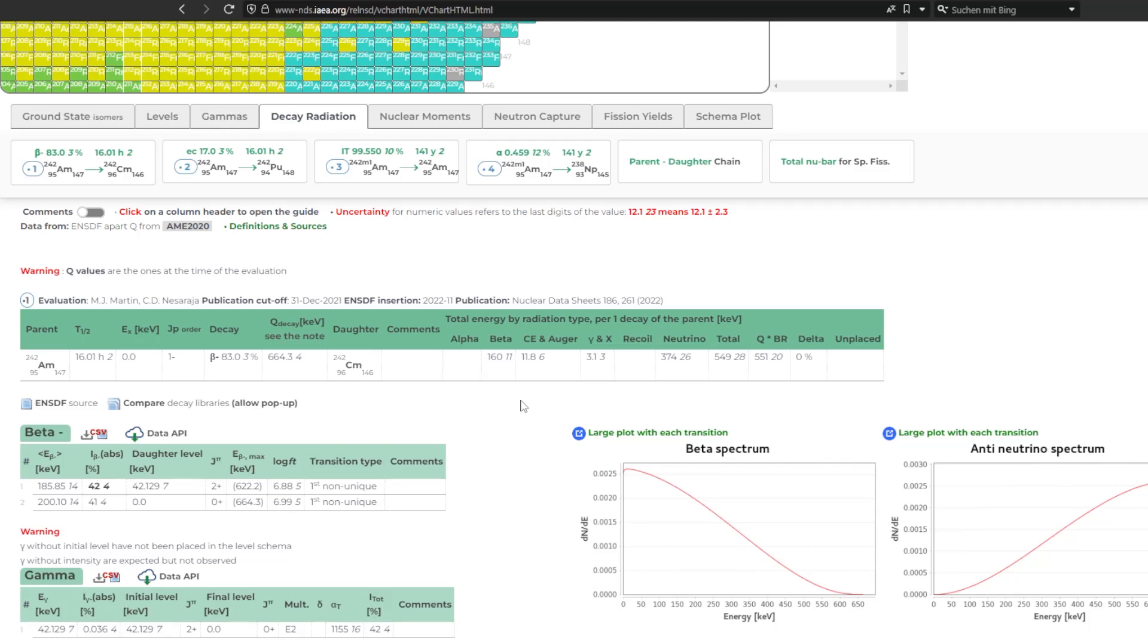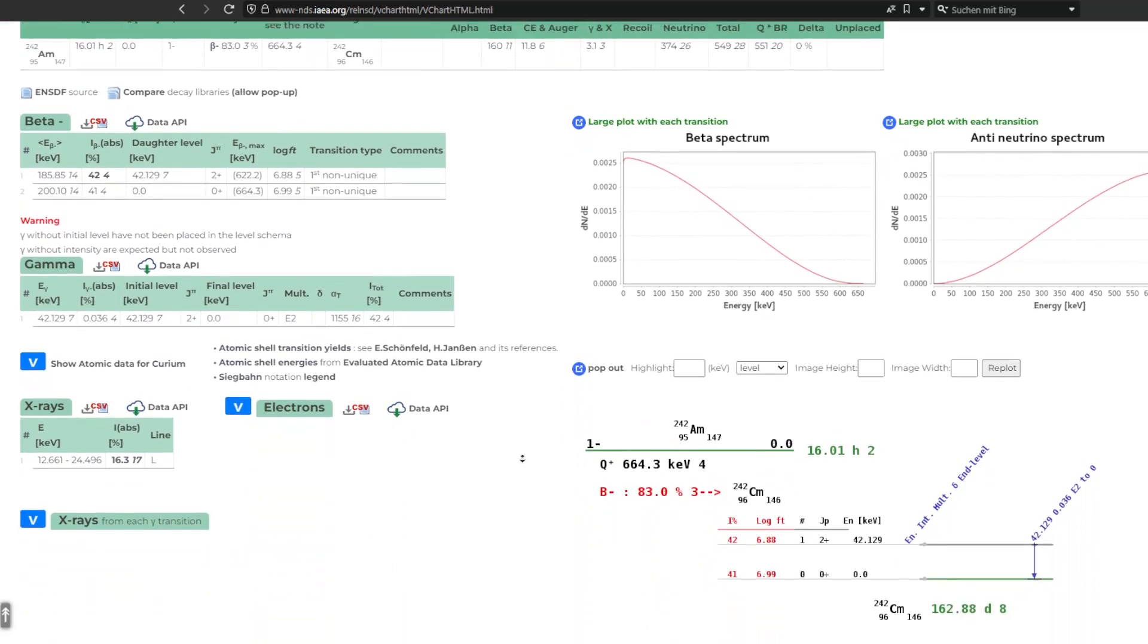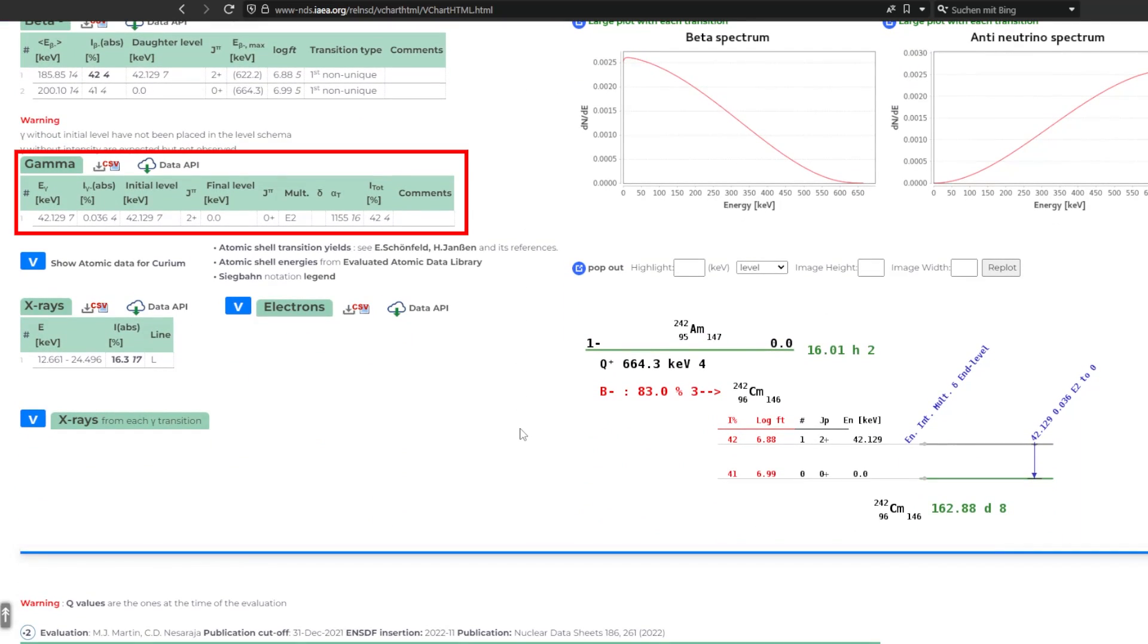141 years? Yeah, that could still be in there, but it only has one line at 42 kilo electron volts. And we don't see that as it can't be measured by the detector. So for now, we don't know. Could be there, but we don't know.